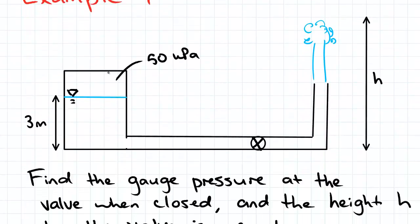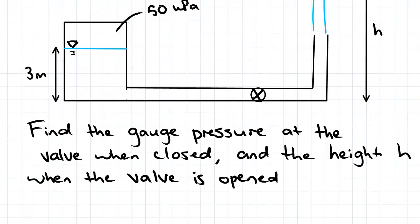So here's the example, there's a tank here at a certain pressure, here's a valve and it's open-ended at the end and it lets off water which gets ejected upwards. So we've been asked to find the gauge pressure at the valve when the valve is closed and the height h when the valve is open, so the height at which the fluid gets ejected.